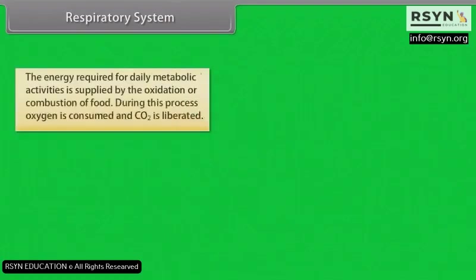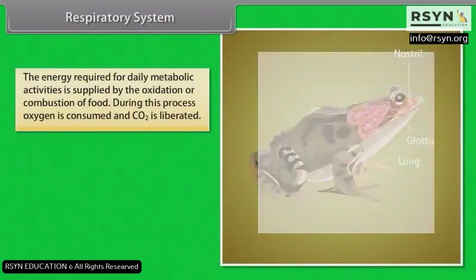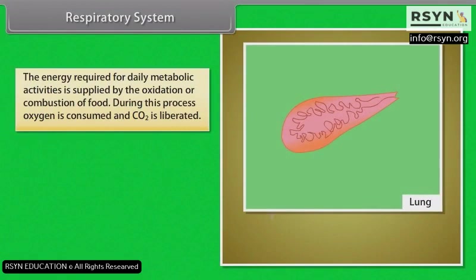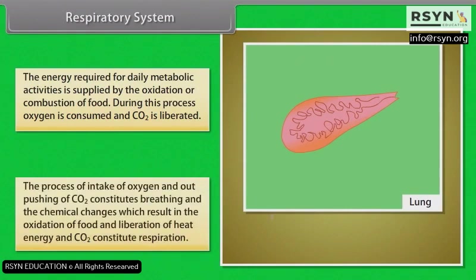Respiratory System: The energy required for daily metabolic activities is supplied by the oxidation or combustion of food, during which oxygen is consumed and CO₂ is liberated. The process of intake of oxygen and expulsion of CO₂ constitutes breathing, and the chemical changes that result in the oxidation of food and liberation of heat energy and CO₂ constitute respiration.